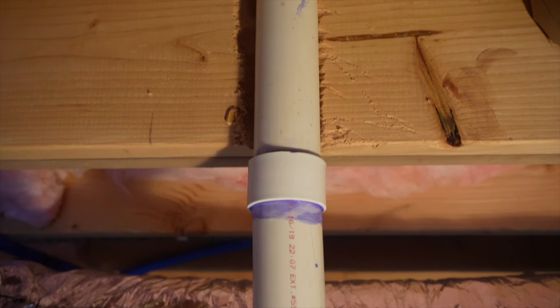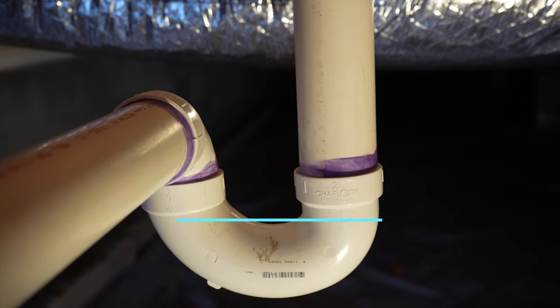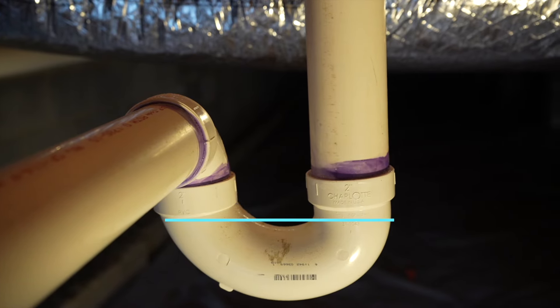As you can see, the water is going to come straight out of that shower pan, down this 2 inch pipe and into this 2 inch trap. That trap is going to give the water a place to lay to keep the sewer gases out of the house.